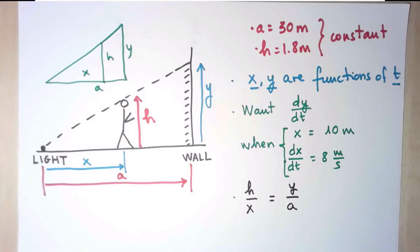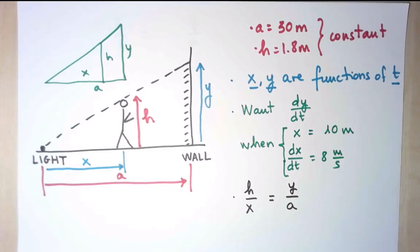Now that the problem is modeled, we can pretty much forget where it came from and solve the new calculus question by taking derivatives. I have a relation between X and Y, and I want a relation between their derivatives. I will obtain that by differentiating this equation implicitly with respect to time.